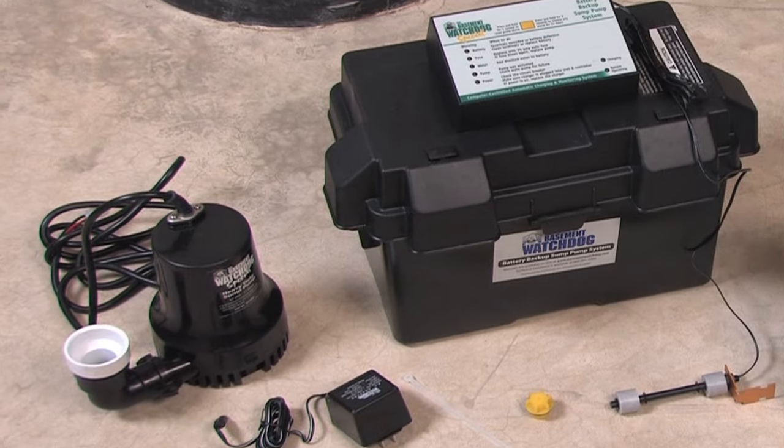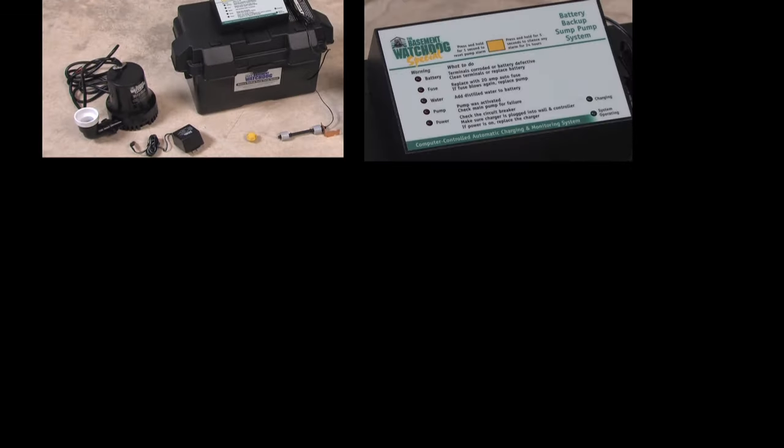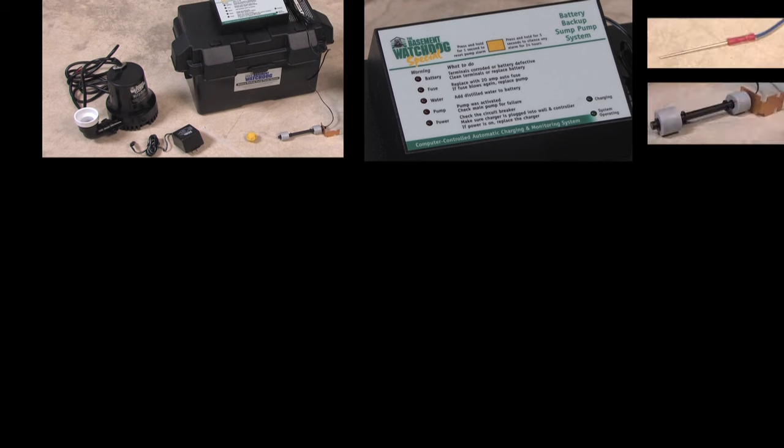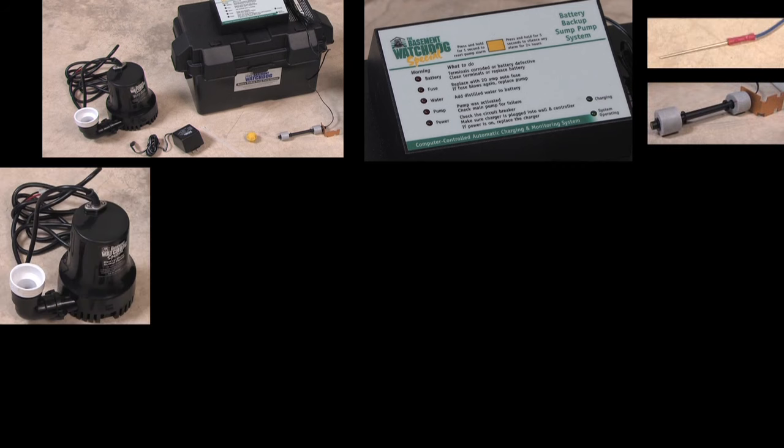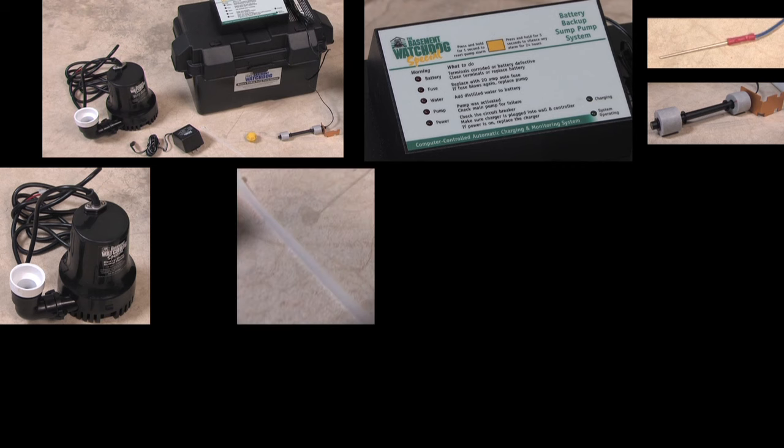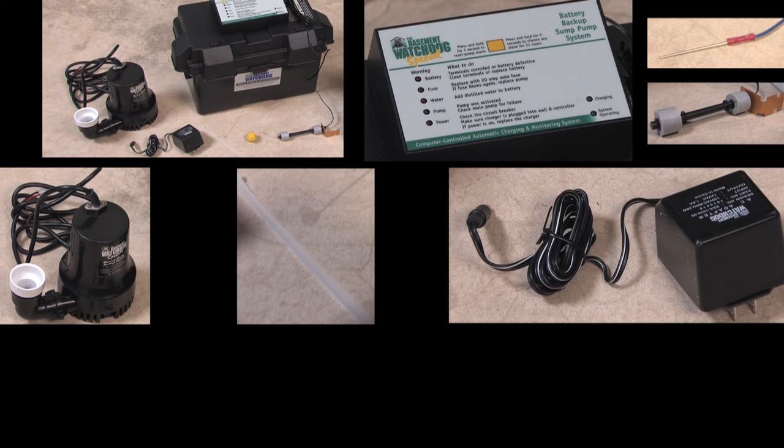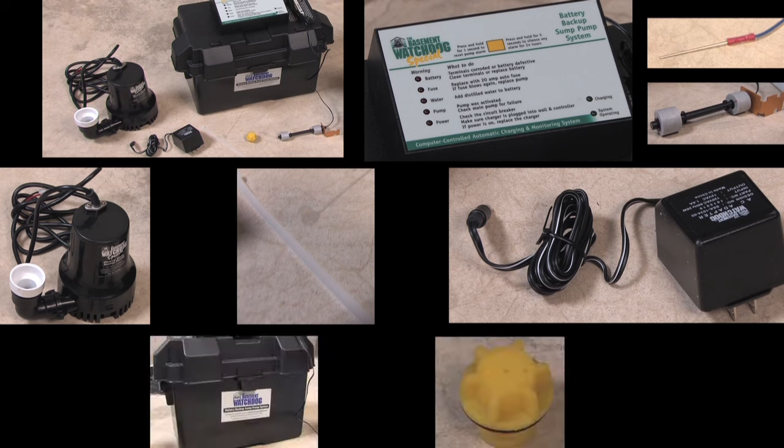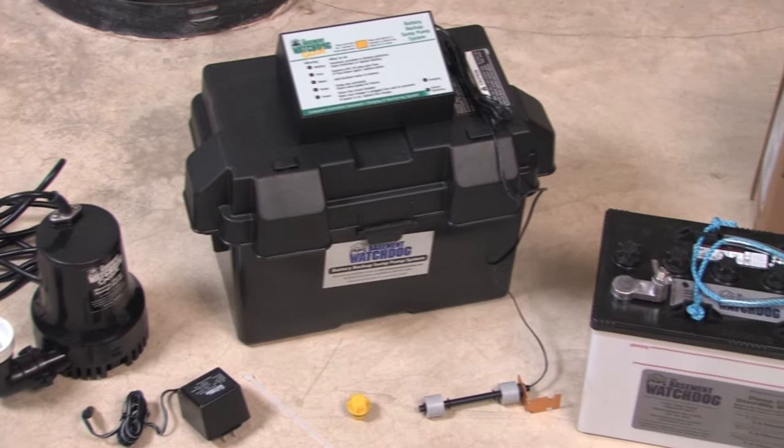The Basement Watchdog Backup Sump Pump System includes a controller with a battery fluid sensor and a dual float switch, a pump with a 1½-inch PVC pipe adapter, a plastic wire tie for mounting the float switch, a charger, a battery box, and a battery cap with a hole to insert the fluid sensor rod.